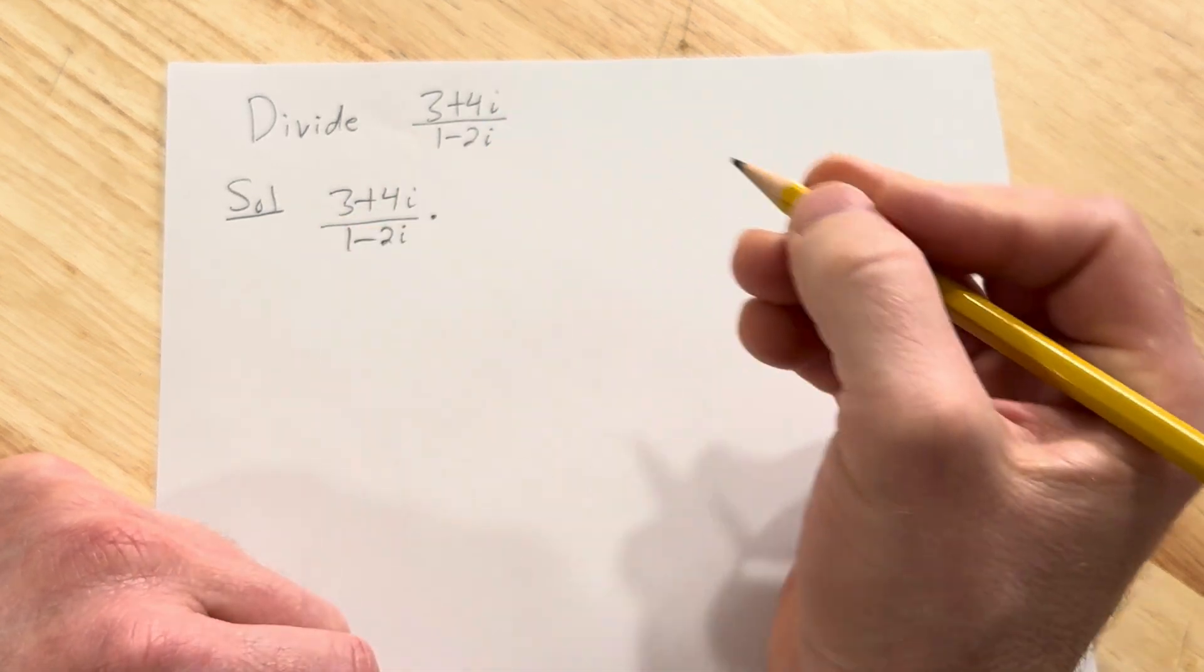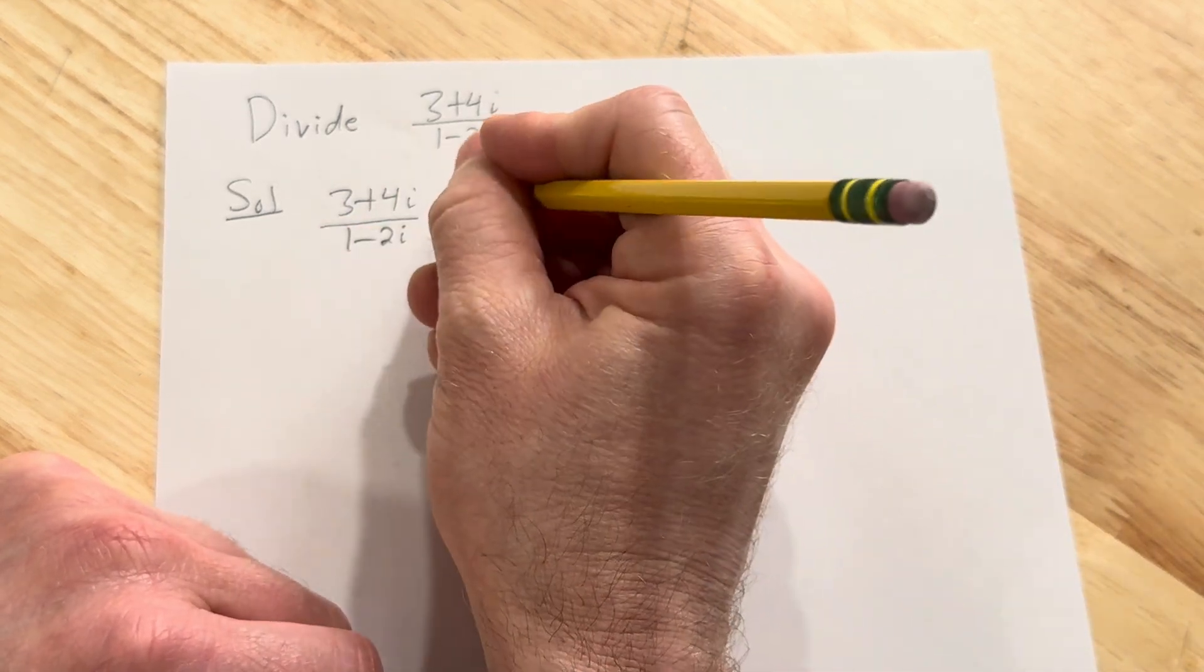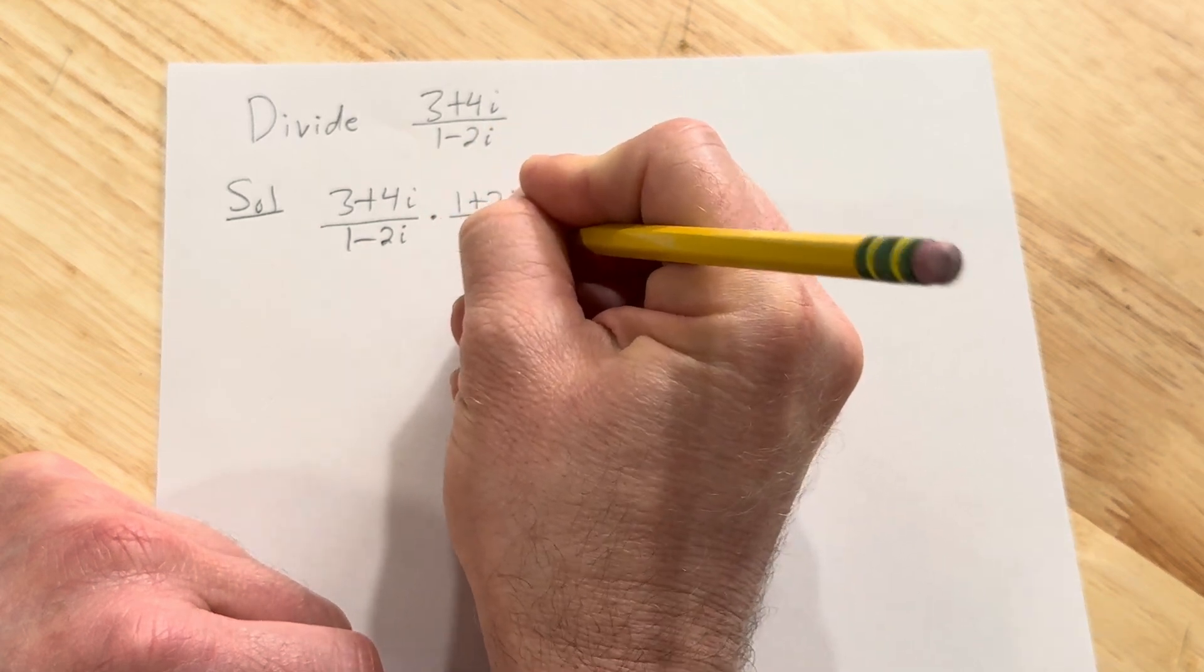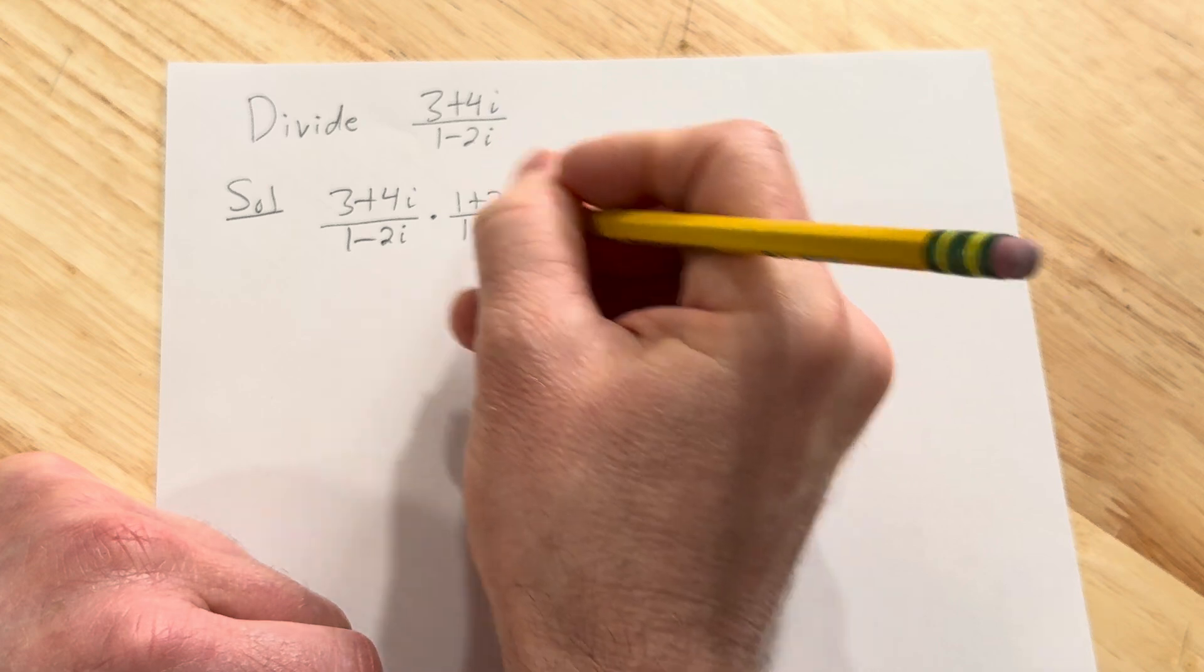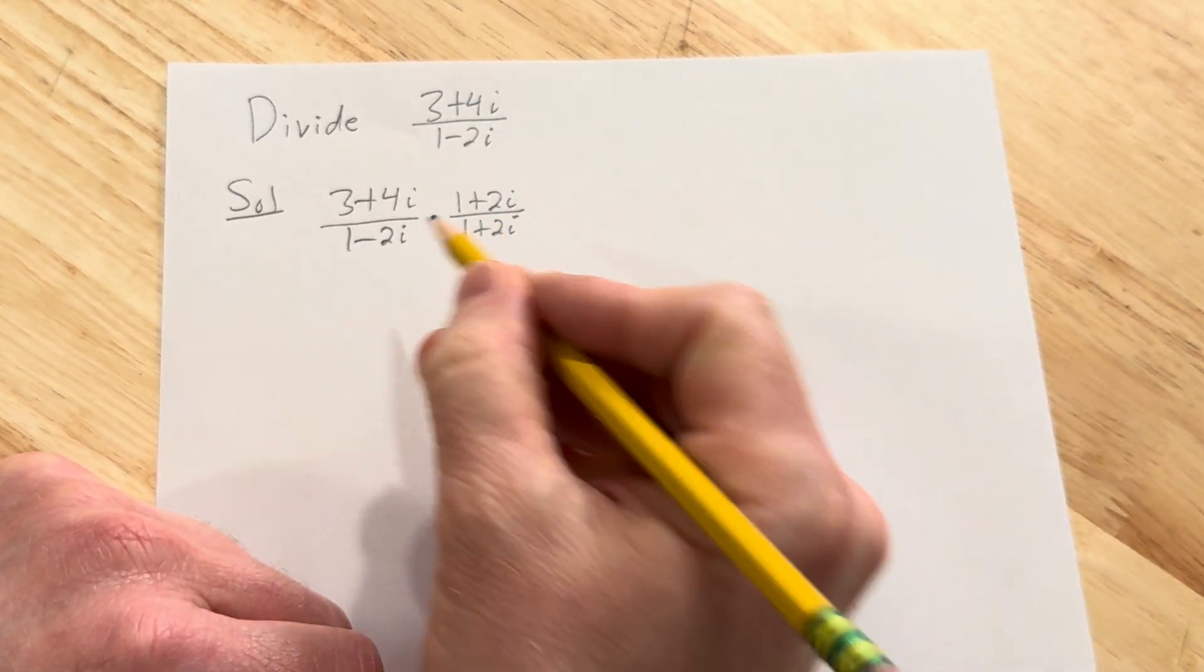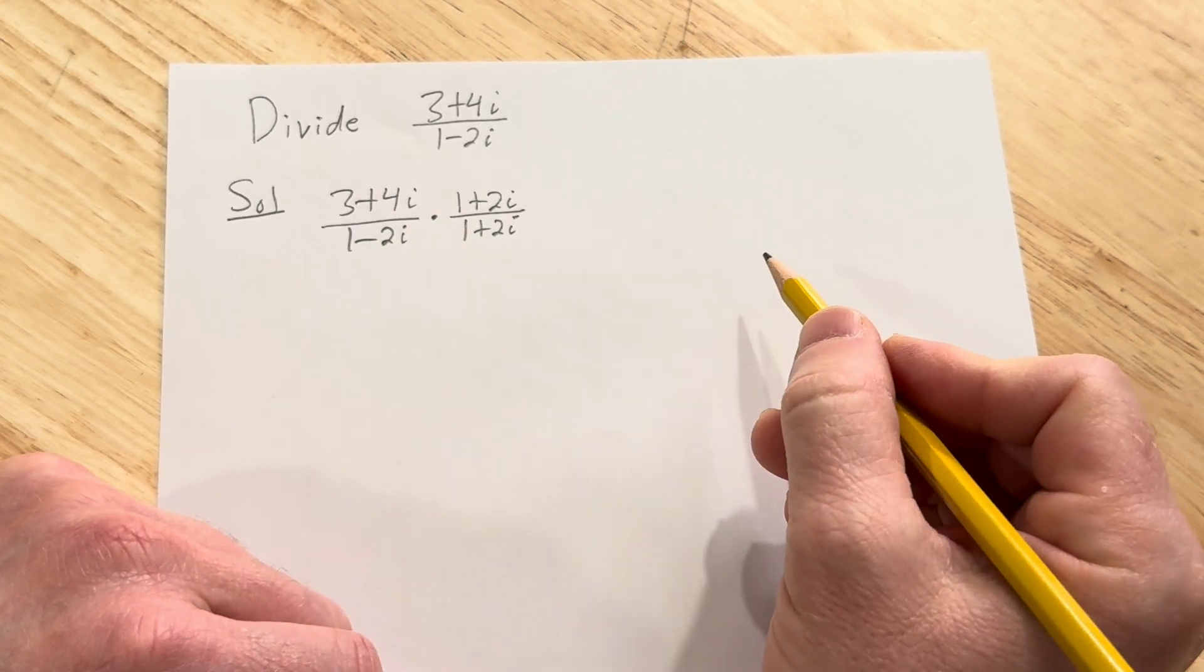But in order to do that legally in mathematics we're going to multiply by 1 like this: 1 plus 2i over 1 plus 2i. And that's allowed because these cancel and we're basically multiplying by 1. So you might be wondering why did we do this? Well the goal is to get rid of the complex number on the bottom.